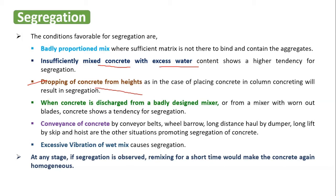The third reason is dropping of concrete from heights. When concrete is dropped from a height of nearly five to six feet, the separation of materials takes place in the air because the materials have different densities — they separate as they fall. The fourth reason is when concrete is discharged from a badly designed mixer. When the mixer is faulty and mixing is not done properly, you will see segregation.